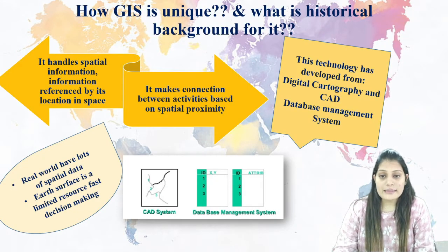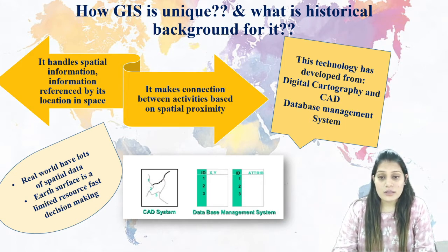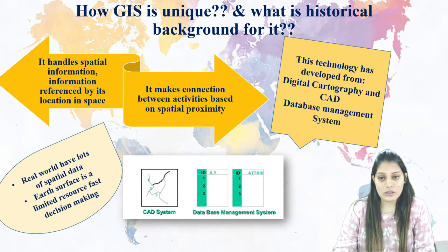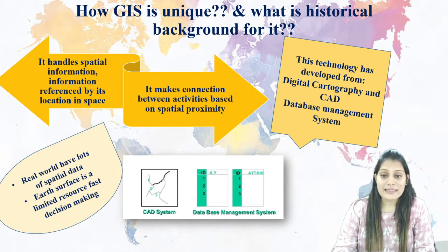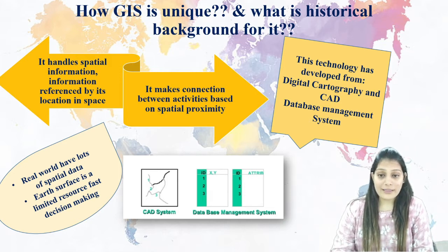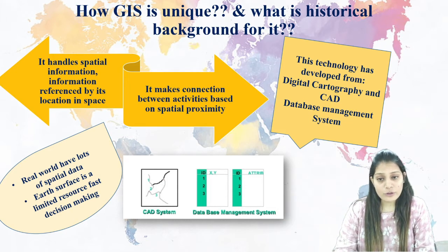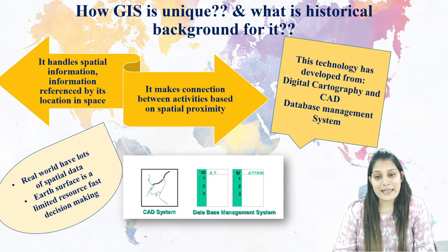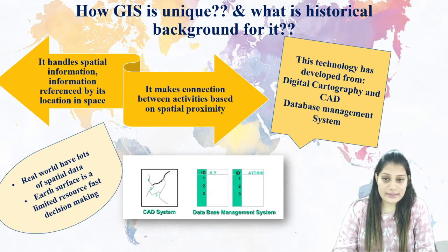In the previous session we also saw that GIS works on spatially referenced data and non-spatial data — that is spatial data and non-spatial data. Here you can see the historical background, how it is helpful to us, and what it is helpful to us. Before going into the detail, I would like to give you an example of how AutoCAD data is converted into GIS data.